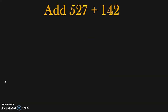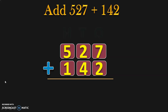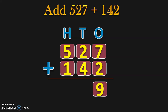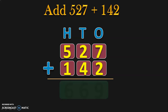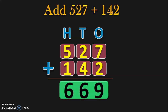Let us do the next example: add 527 plus 142. Both are 3-digit numbers, so write them one below the other. Write down the place values — 1s, 10s, and 100s — and begin from the 1s place: 7 plus 2 gives you 9. Move to the 10s place: 2 plus 4 gives you 6. Move to the 100s place: 5 plus 1 gives you 6 — when 1 is added to any number, you get the next number, which is also a property of addition. So 527 plus 142 gives you the answer 669.